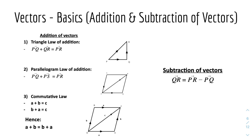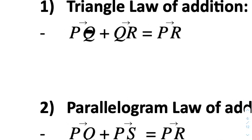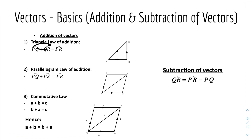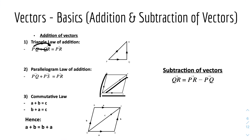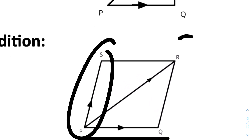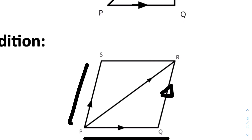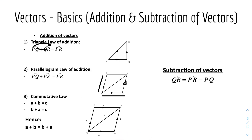Then we have addition and subtraction of vectors. Here we have the triangle law of addition: PQ plus QR equals PR, where Q just cancels out and you go from P to R. And number 2, the parallelogram law of addition: PQ plus PS equals PR. Because in a parallelogram these two sides must be the same — if one side is PS, then the opposite side has to be PS too, because it's the same length, direction, and magnitude. We also have the commutative law: A plus B equals C and B plus A equals C, hence A plus B equals B plus A. And the subtraction of vectors: QR equals PR minus PQ.